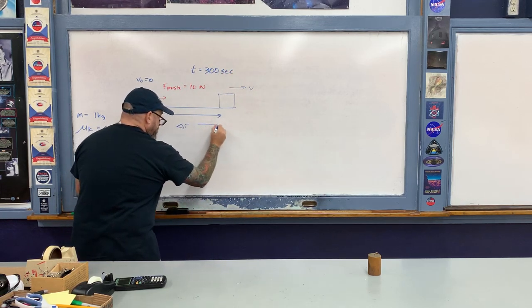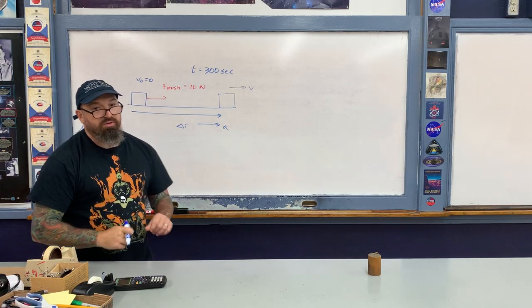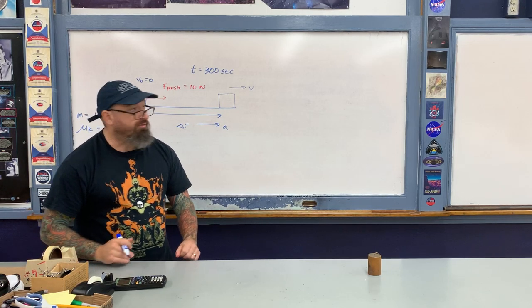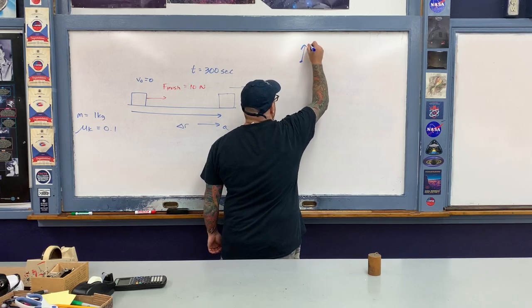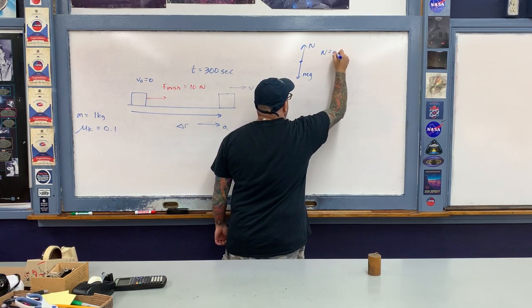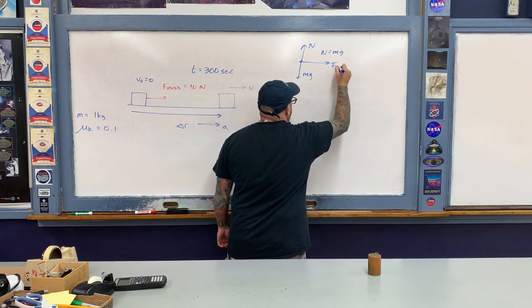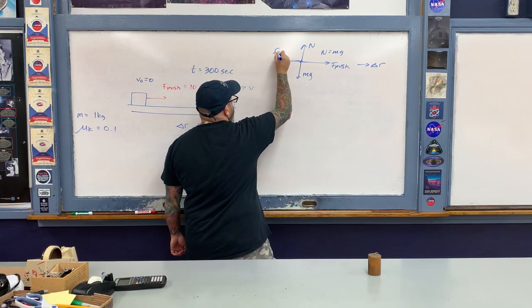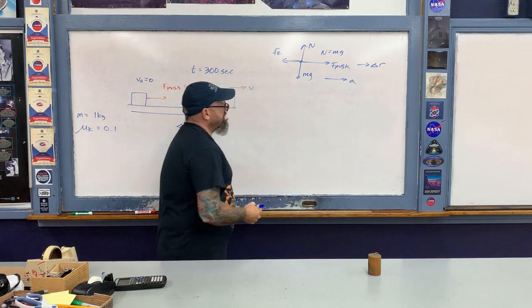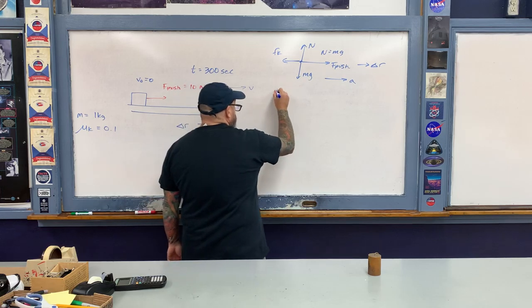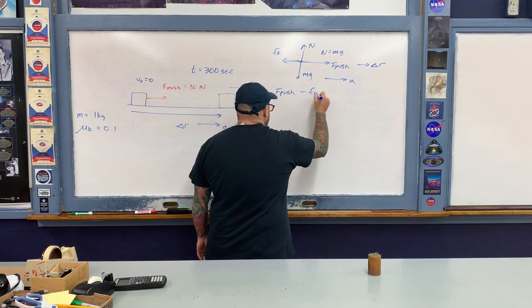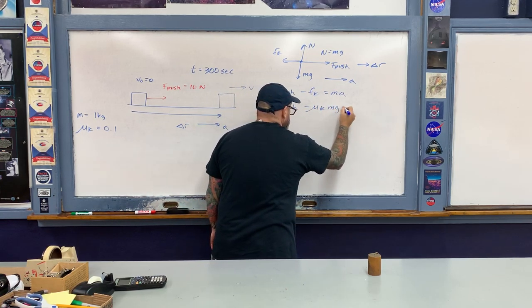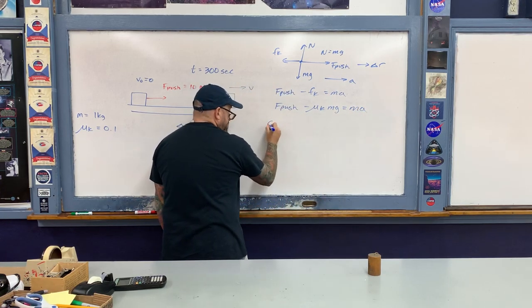To do the kinematics we need the acceleration, so we apply F = ma. The force diagram shows the normal force and weight canceling vertically. Horizontally, F_push acts in the direction of displacement, while kinetic friction opposes motion. Summing forces horizontally: F_push minus the force of kinetic friction equals ma. The kinetic friction force is the coefficient times the normal force, and since the normal force equals the weight, dividing by mass gives the acceleration.